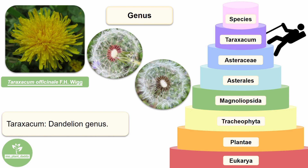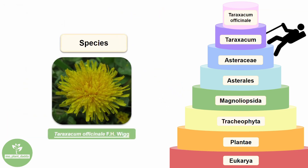Again, a genus and specific epithet make up a species name. So we started at domain, then went through kingdom, division, class, order, family, and genus, and have finally reached Taraxacum officinale at the species level.